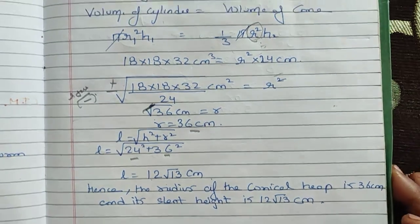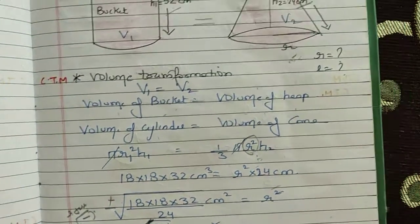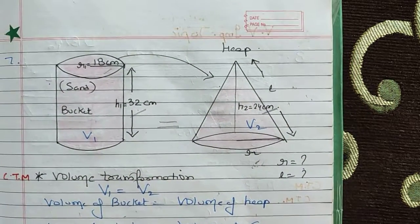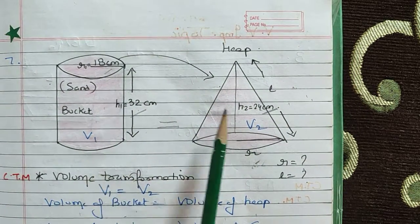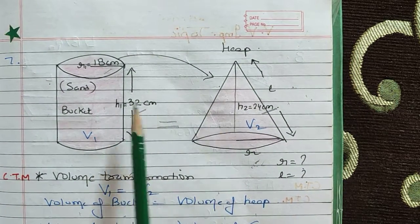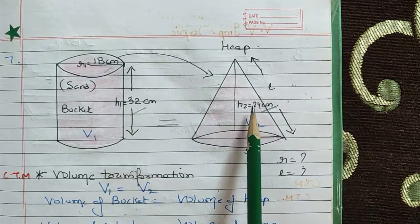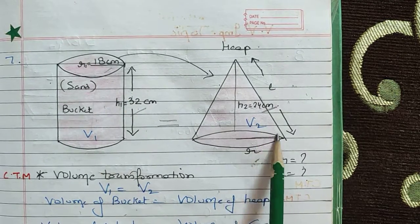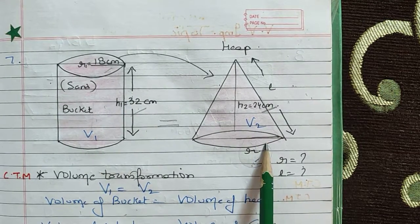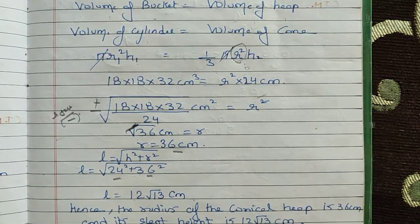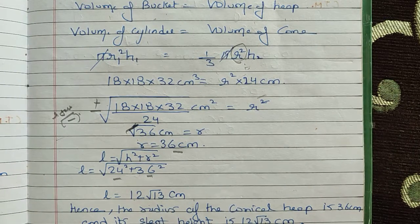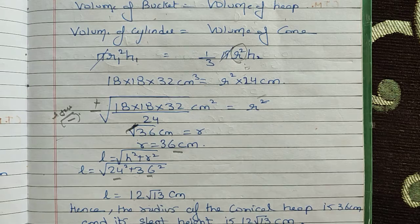These are very important questions, and students, they are quite straightforward. This is volume transformation: volume of cylinder equals volume of cone; r and h of the cylinder are given, h of the cone is given, then you solve for r and l. That's all for today's class — have a nice day.